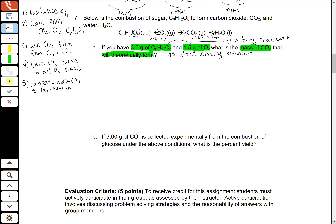Next I need the molar mass of CO2, O2, and sugar. The molar mass of C6H12O6 is calculated by adding up the carbon, hydrogen, and oxygen atom molar masses, and I get a total of 95.994 grams per mole. The molar mass of O2 is two times the molar mass of oxygen, which is 15.999, so that gives me 31.998 grams per mole. And the molar mass of carbon dioxide is one carbon and two oxygens added together for a total of 44.01 grams per mole.